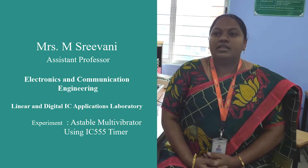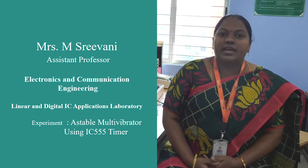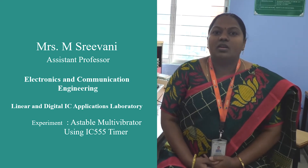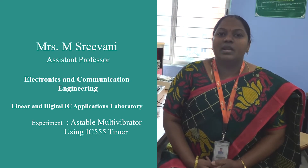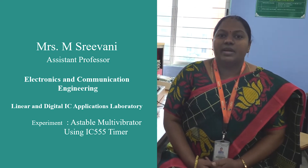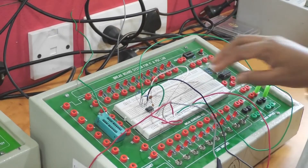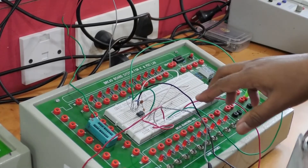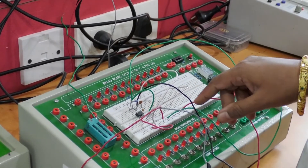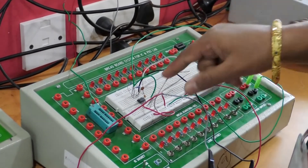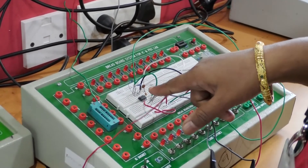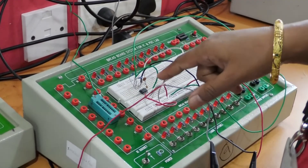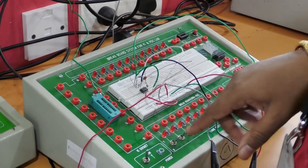Let us go for the circuit diagram. Based upon that, we will observe the input and output signals of the astable multivibrator. Here is the circuit diagram. We are going to design this astable multivibrator. As we know, the functional diagram of IC 555 timer basically consists of 8 pins.